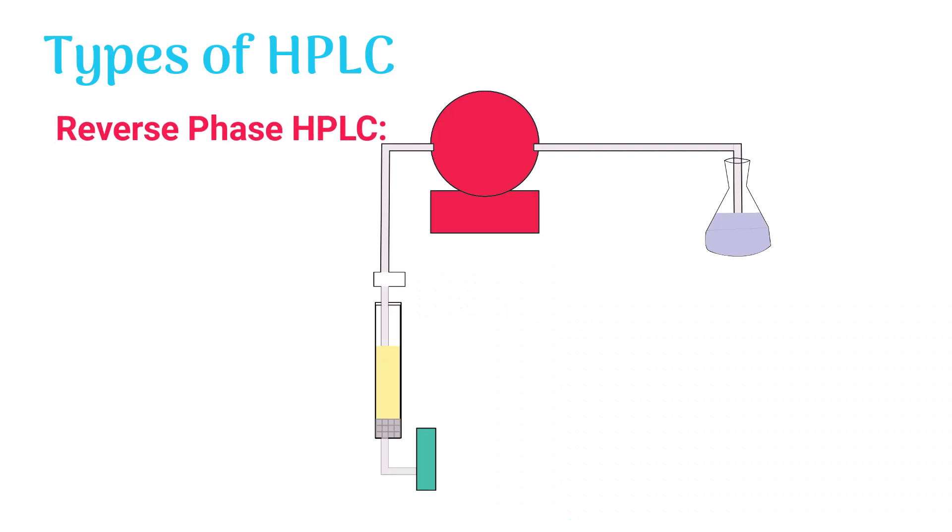Reverse phase HPLC. In this type of HPLC, the mobile phase is polar and has charged molecules, while the stationary phase is non-polar and has no charge.